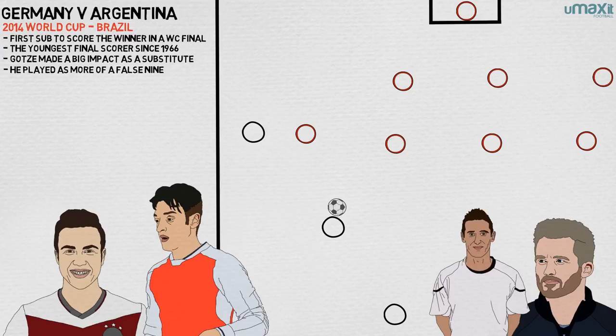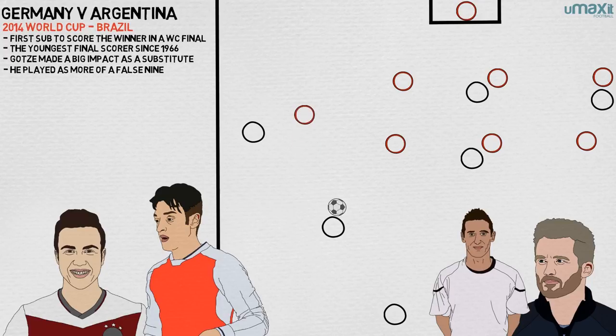Germany had Gotze on the far left, two players more centrally, and Müller wide right. While Gotze was not tightly marked, Zabaleta was close enough to him to close down quickly.